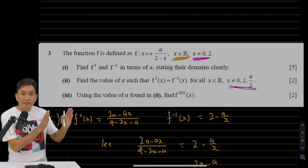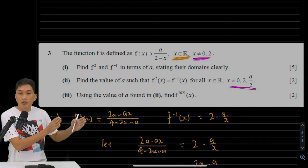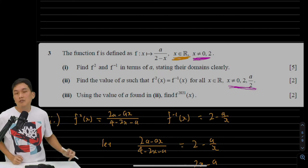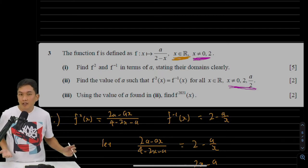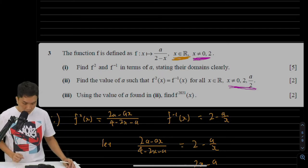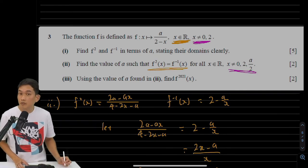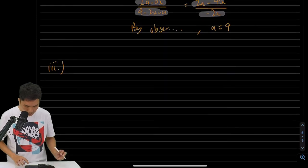It means that you have f, the first machine f, that goes straight into the next f, into the next f, into the next f, 2021 fs all together. How do we actually do that? We actually have to make use of something that we learned earlier on, which is this: f squared equals to f inverse.